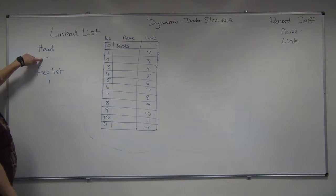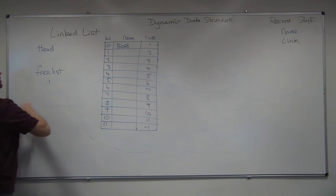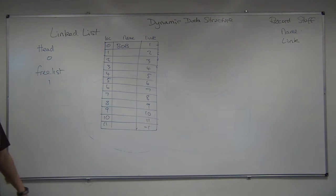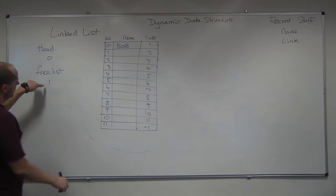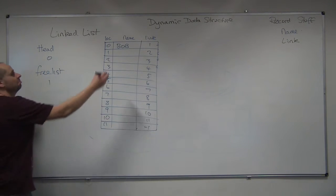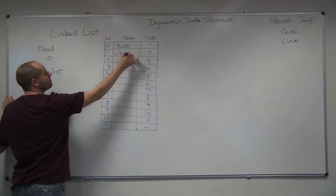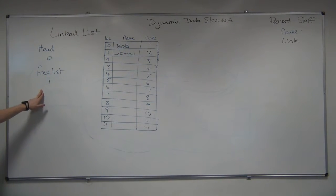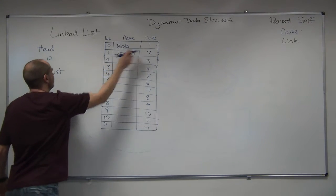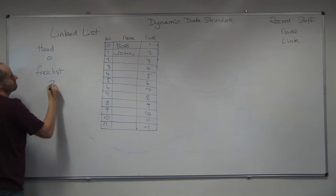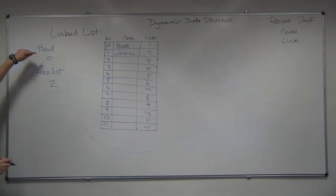The head, now it doesn't point to nothing, it points to 0. Give me another name. John. Look for my free space. The free space now is at position 2. Where does that fit into the current list of names though? Oh, I've made a mistake.